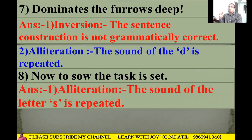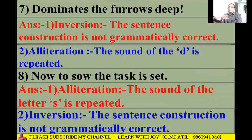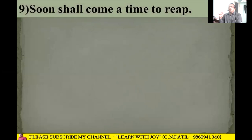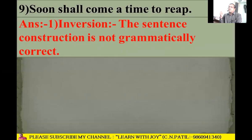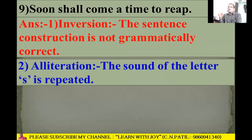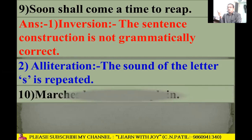Next line: 'Now to sow the task is set.' Alliteration is there because the 's' sound is repeated: 's' in 'sow' and 's' in 'set.' Inversion is also there because the sentence construction is not in grammatical order. Additionally, alliteration is there with 's' in 'soon' and 's' in 'shall.'